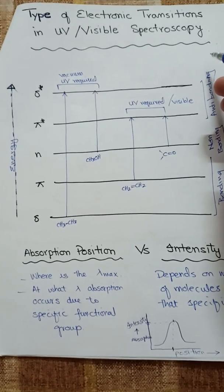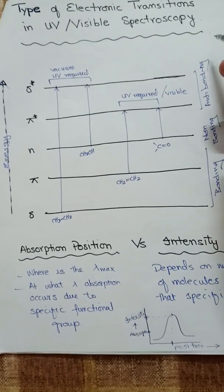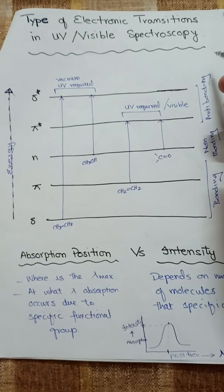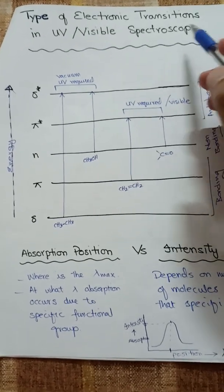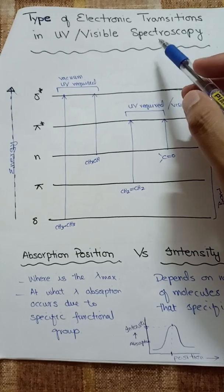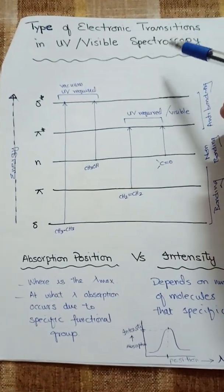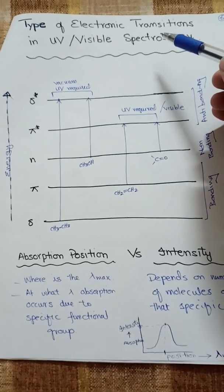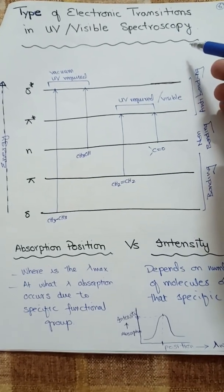Assalamualaikum, dear viewers. This is our second video on organic spectroscopy. Today we will discuss different aspects of UV-visible spectroscopy, and first we should know the different types of electronic transitions that occur during UV-visible spectroscopy.